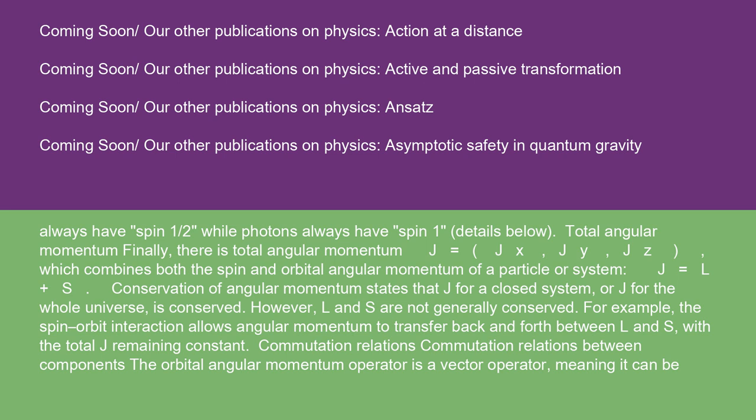Finally, there is total angular momentum J = (Jx, Jy, Jz), which combines both the spin and orbital angular momentum of a particle or system: J = L + S. Conservation of angular momentum states that J for a closed system, or J for the whole universe, is conserved. However, L and S are not generally conserved individually. For example, the spin-orbit interaction allows angular momentum to transfer back and forth between L and S, with the total J remaining constant.